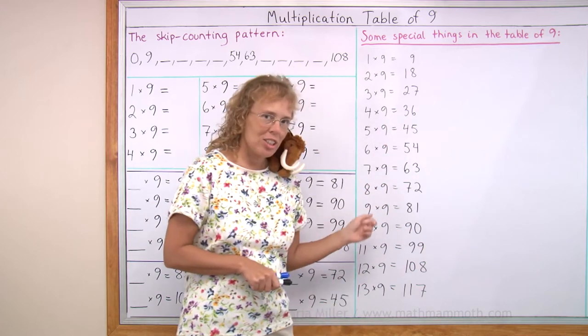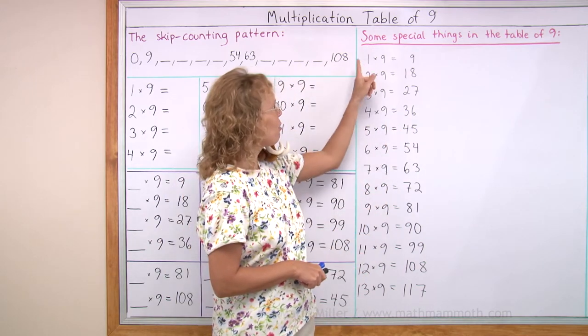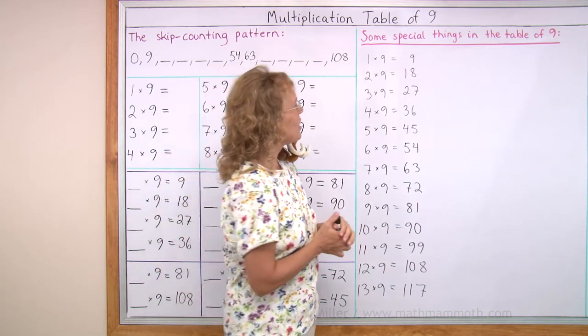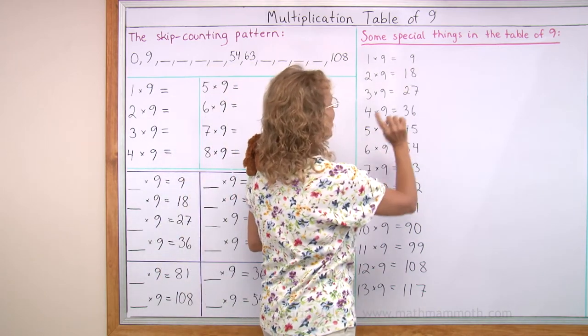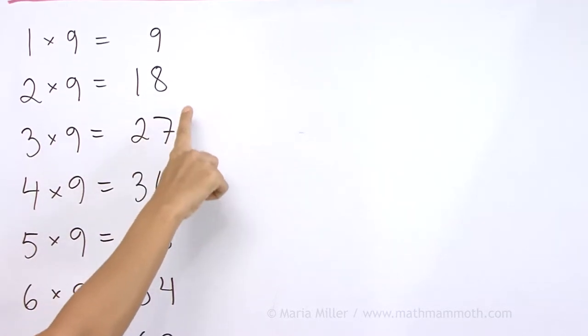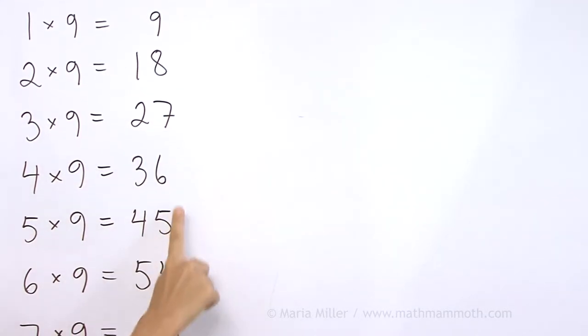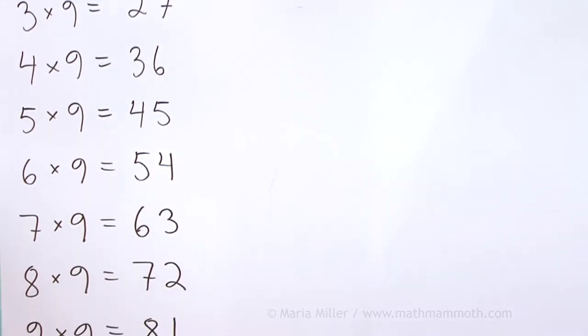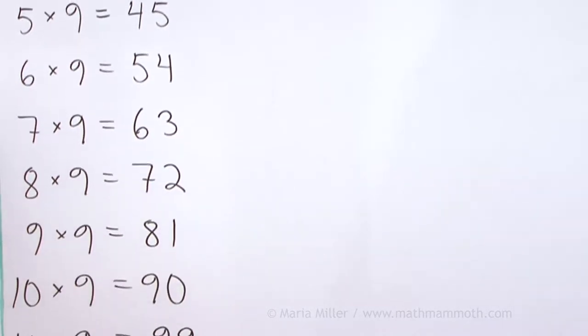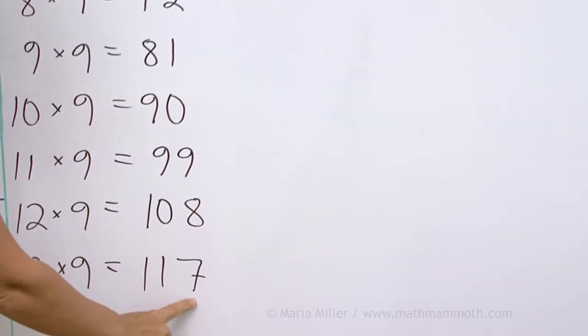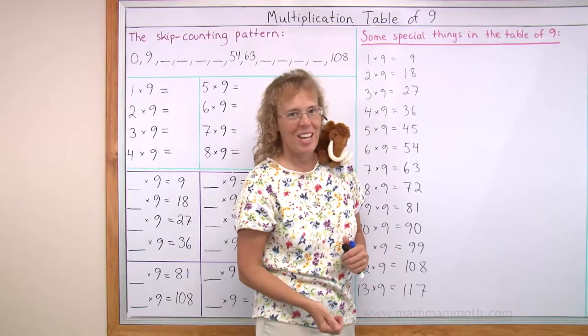First of all, I wrote here the multiplication table of 9, all the way from 1 times 9 to 13 times 9, and notice the digits here. I have 9 here in the ones place, here I have 8, and then 7, 6, 5, 4, 3, 2, 1, 0, then it starts all over again with 9, 8, 7, that would be 6 and so on.